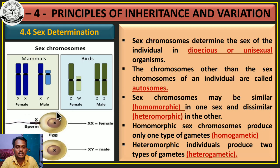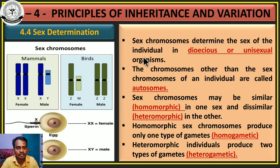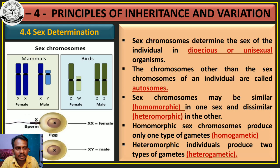The sex chromosomes determine the sex of the individual. The individual may be a dioecious or unisexual organism. A unisexual organism is one where a single individual contains only one sex — either male or female. Human beings are sexually dimorphic organisms. The chromosomes other than the sex chromosomes of an individual are called autosomes, and the chromosomes responsible for transfer of somatic characters are also called autosomes.